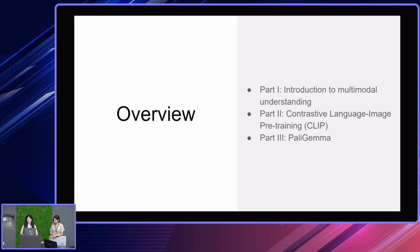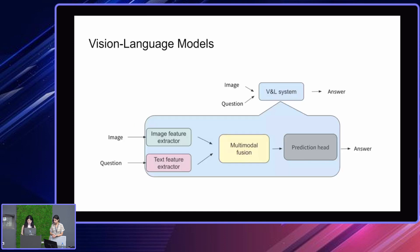The second part will be more hands-on exercises with contrastive language image pre-training, CLIP for short. Here we'll look into implementing the CLIP loss and then trying to do some interesting tasks using CLIP pre-trained models. And as a third part, we'll look into fine-tuning PaliGemma, which is a powerful 3 billion parameter vision language model.